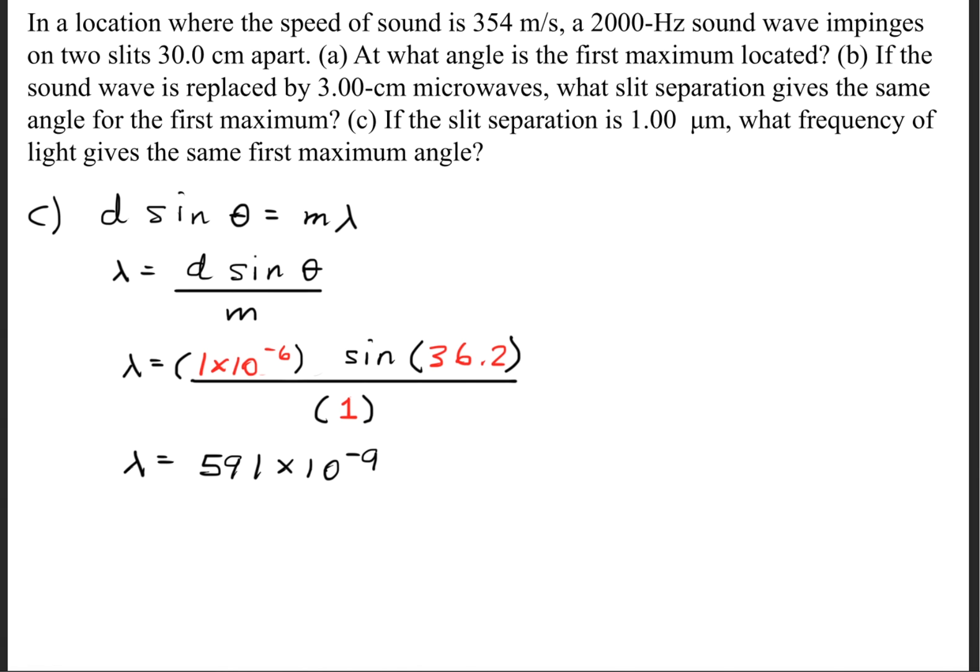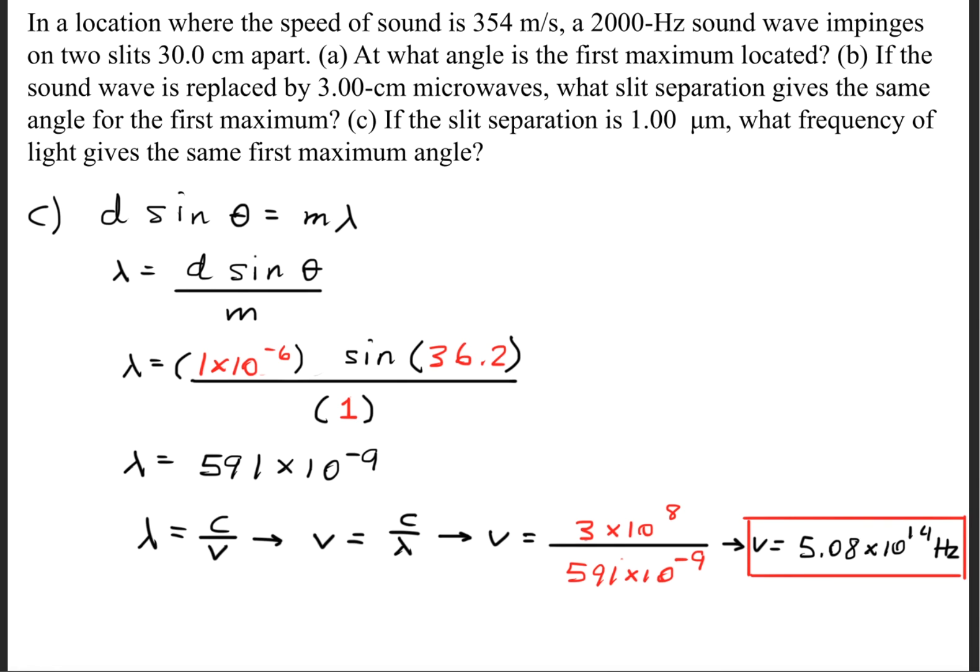For part C, we'll again use the constructive interference formula, rearranged to solve for the wavelength. When we plug in the variables, we get a wavelength of 591 nanometers. Next, we use the wavelength formula λ = c/f, because a microwave is an electromagnetic wave that travels at the speed of light. Taking the speed of light as 3×10⁸ m/s and dividing by the wavelength, we get a frequency of 5.08×10¹⁴ hertz.